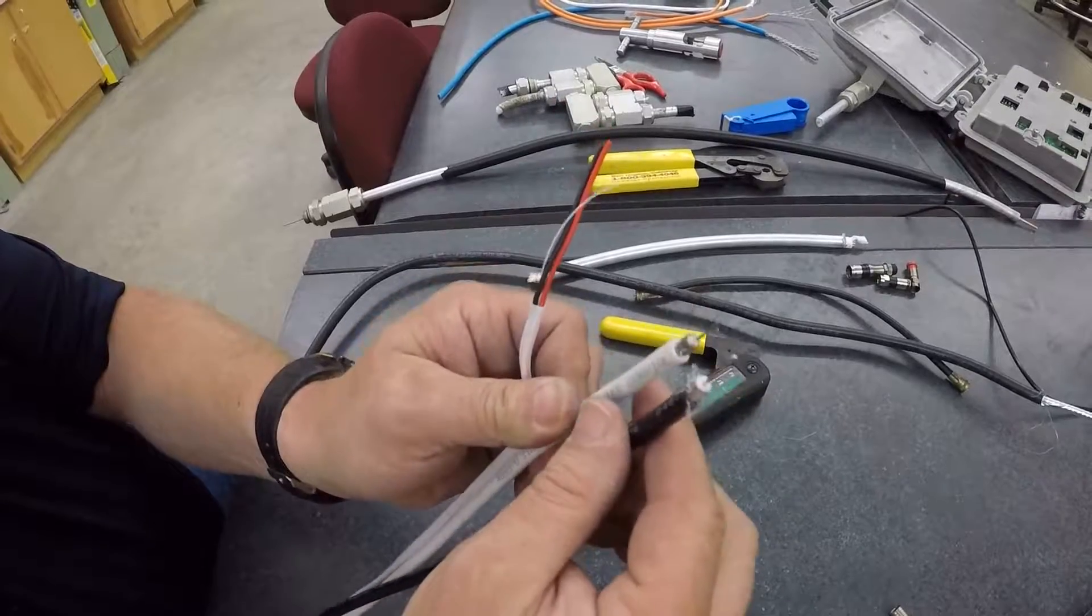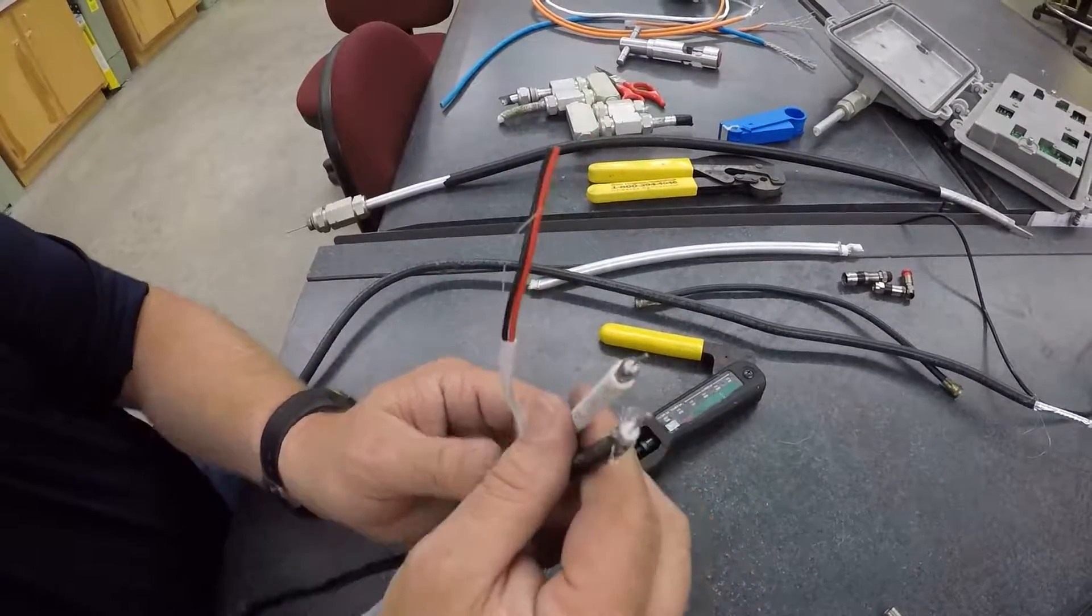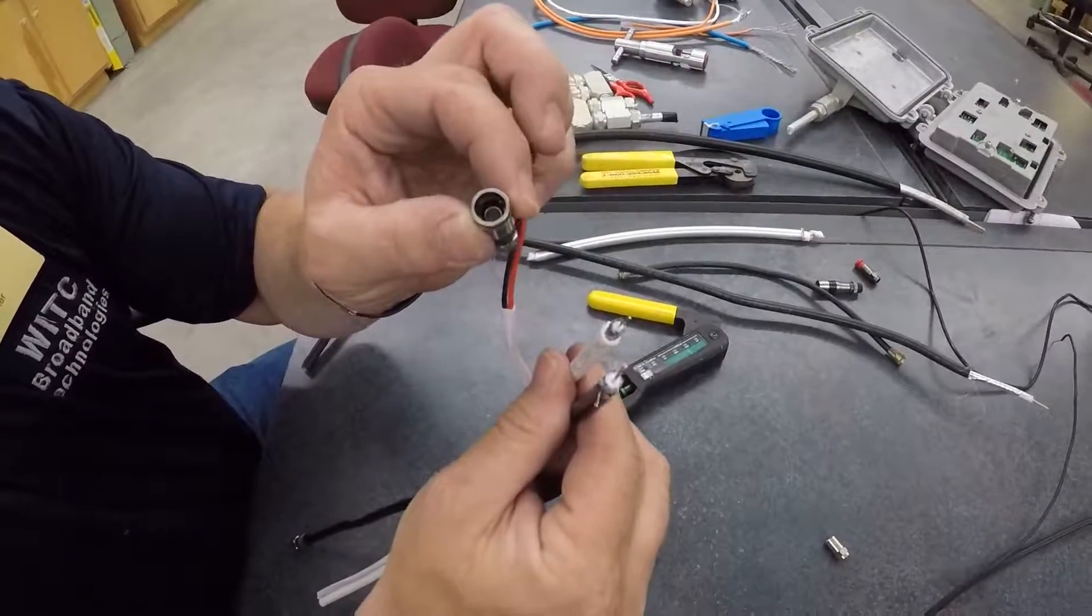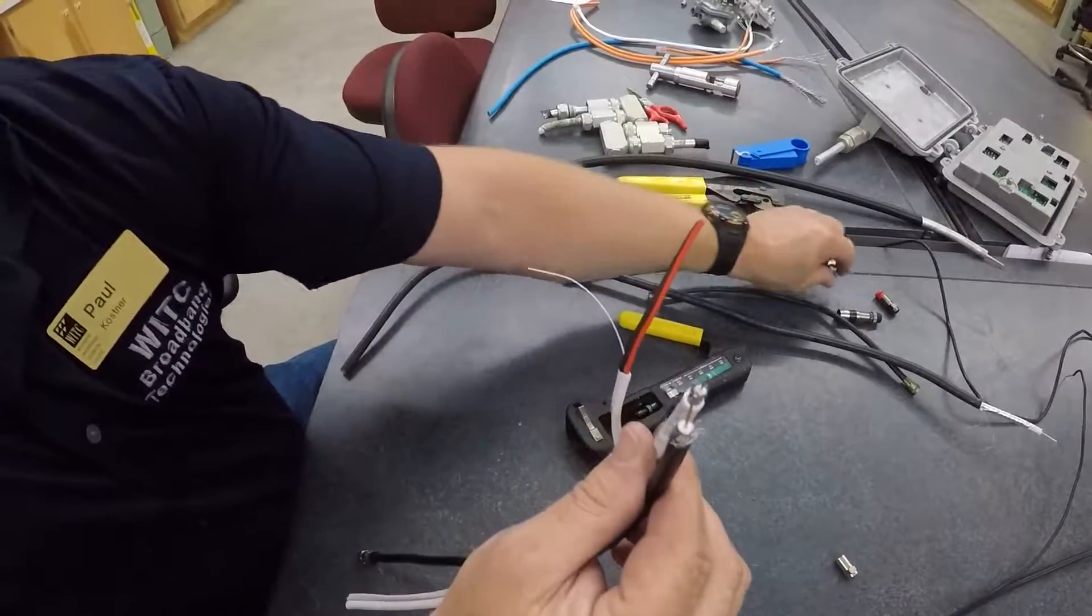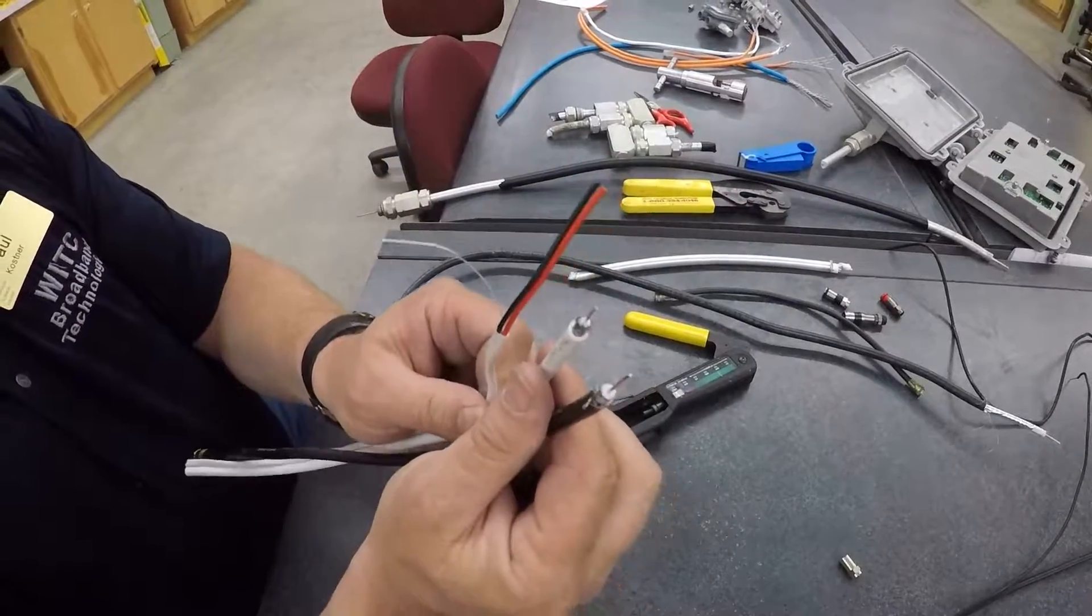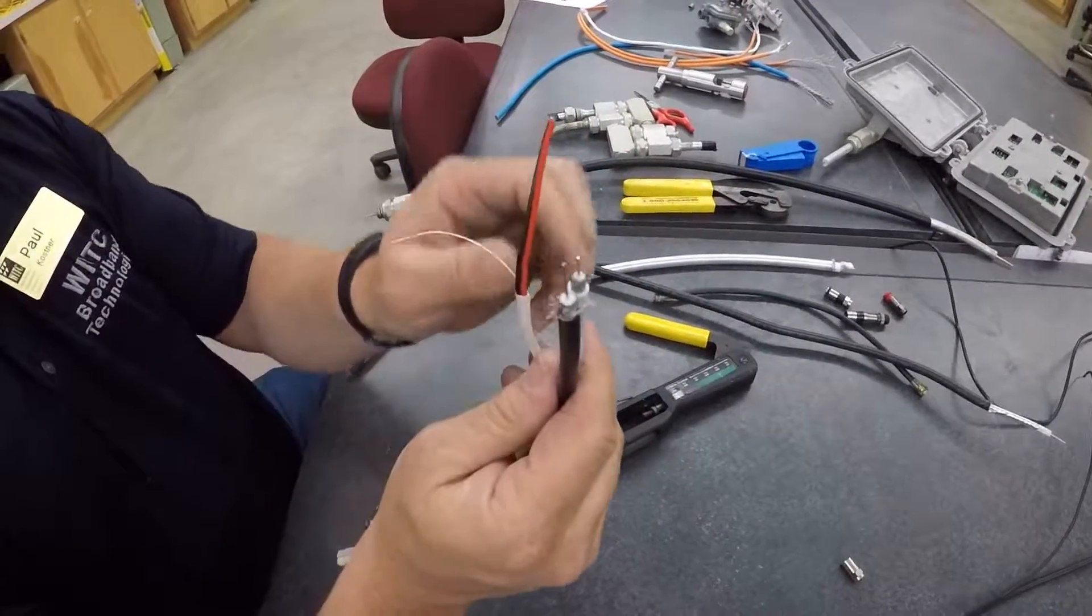So when you have a smaller type of cable, RG59, then you have to use different types of connectors, because your center conductor won't fit on one or the other. So you have to use the correct connector for termination.